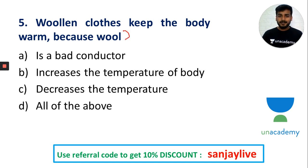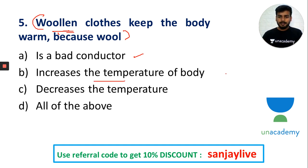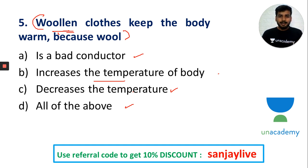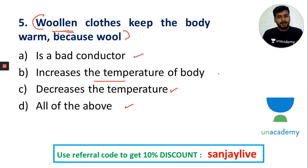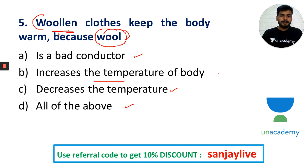Woollen clothes keep the body warm because wool is a bad conductor of heat. Cotton is also a bad conductor but wool is better. Wool does not increase the temperature of the body itself, but it prevents heat from escaping. Modern synthetic materials and blankets are also used, but wool remains effective because it traps air and acts as an insulator.